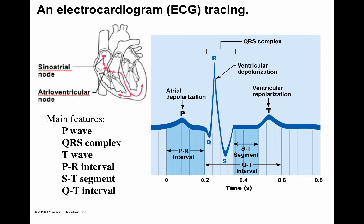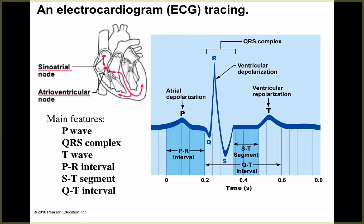Looking at the ECG trace, the first main feature is the P wave — the depolarization of the SA node representing atrial depolarization. After the P wave, you have the PR interval, which represents the time from atrial excitation to the beginning of ventricular excitation.